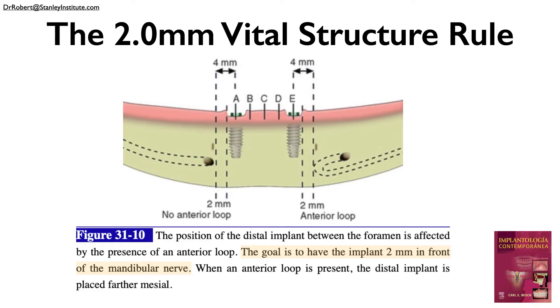What else determines the optimal length of our implants? It's actually pretty simple: make your implant as long as possible without breaking the two millimeter rule. The two millimeter rule says that the edge of the implant should not come within two millimeters of a vital structure once placed. So choose the longest implant you can without coming within two millimeters of a nerve, sinus, or other vital structure.